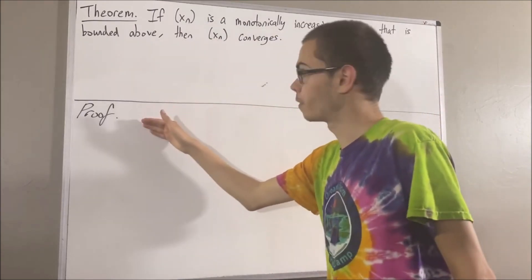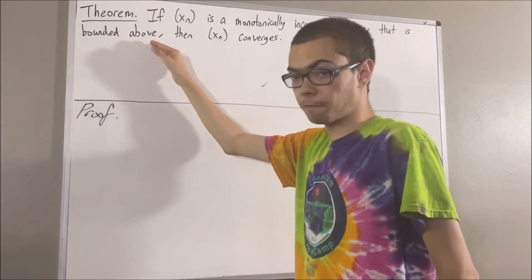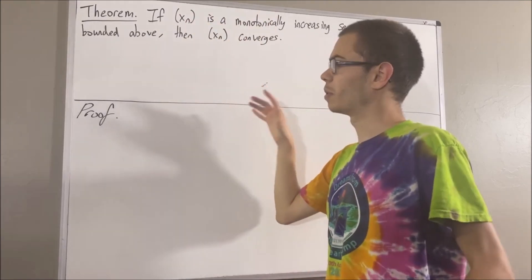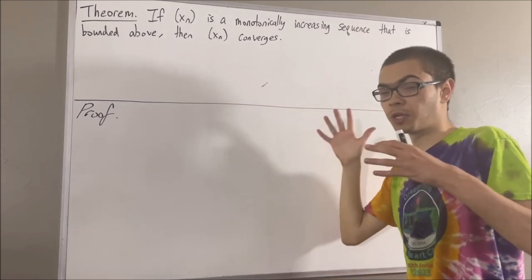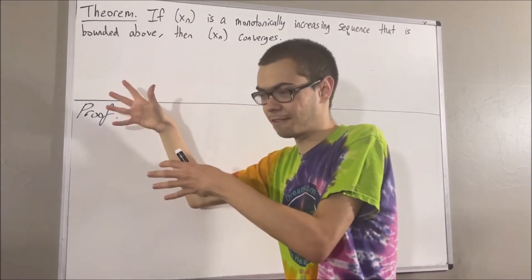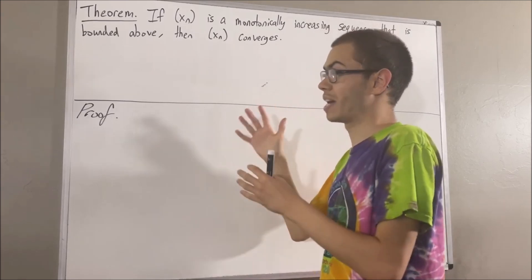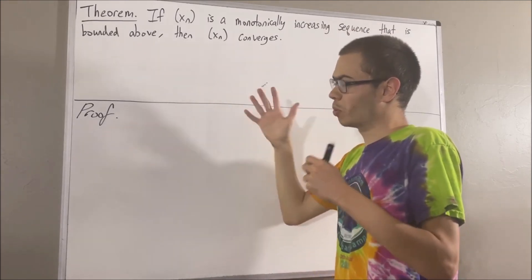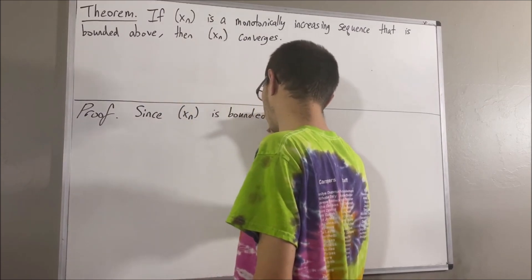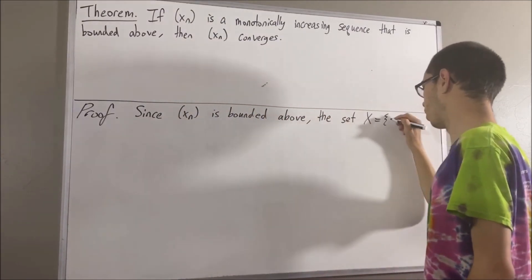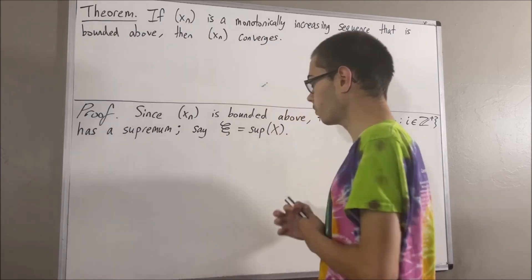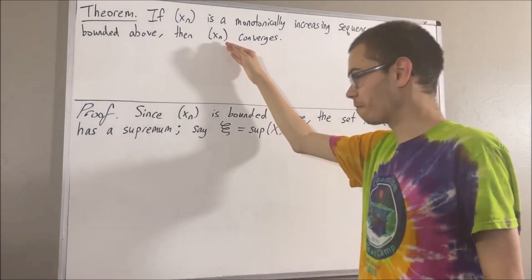To start our proof, since the sequence is bounded above, this means the set of output values of our sequence has an upper bound. But then, one of the properties of real numbers is that since the set of output values has an upper bound, it must then have a least upper bound, also known as a supremum. We will call the least upper bound of that set by the Greek letter psi. And the claim is that our sequence converges to psi.